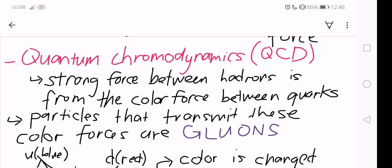The particle messengers that transmit these color forces are called gluons. If you recall, the gluons we discussed are particles associated with the bosons, which are the force carriers.